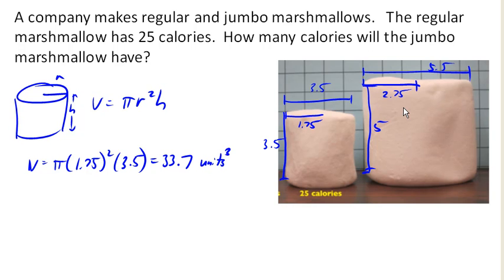So the volume of the jumbo marshmallow, we got pi times 2.75 squared times 5 is 118.8 units cubed for the jumbo marshmallow.